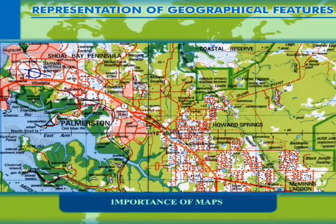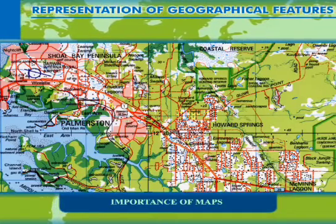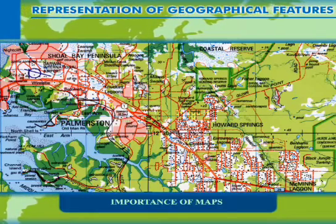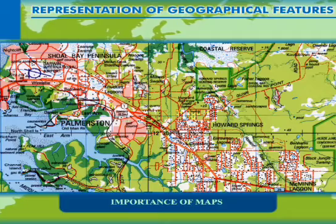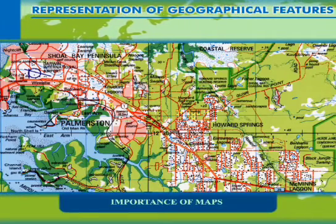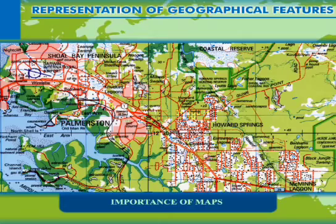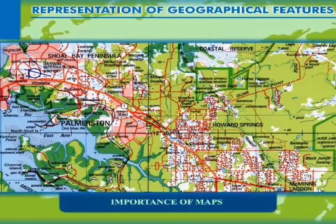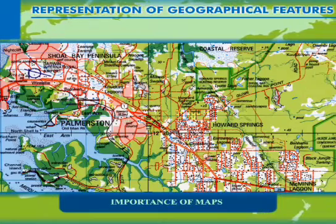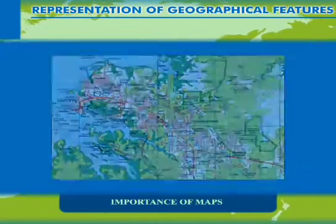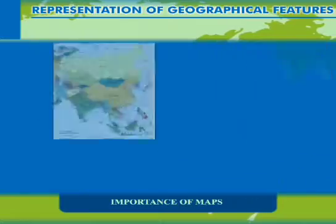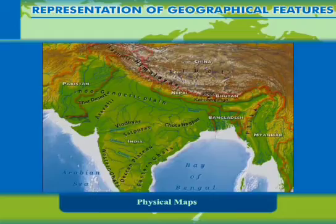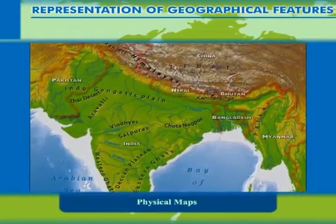Geographical maps represent the whole earth or any part of it on paper or any flat surface. Maps provide a variety of information about any area, and thus they are classified into various types. Maps are generally classified into three types: physical maps, political maps, and thematic maps.